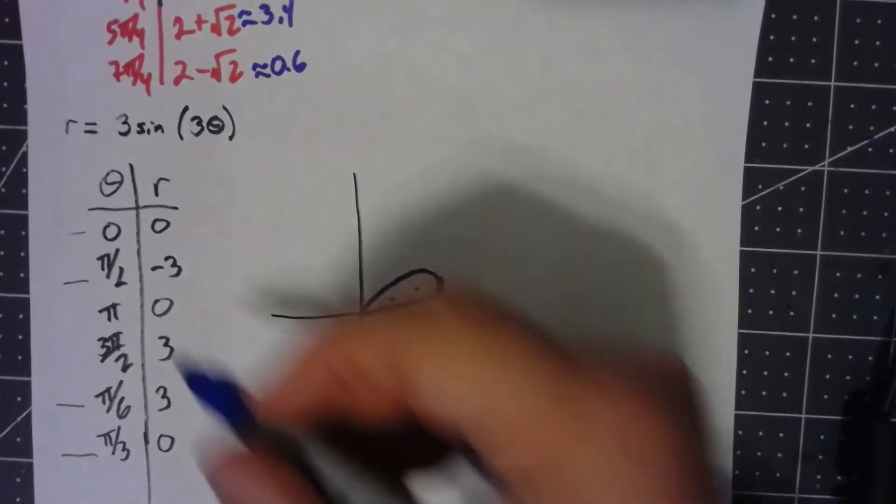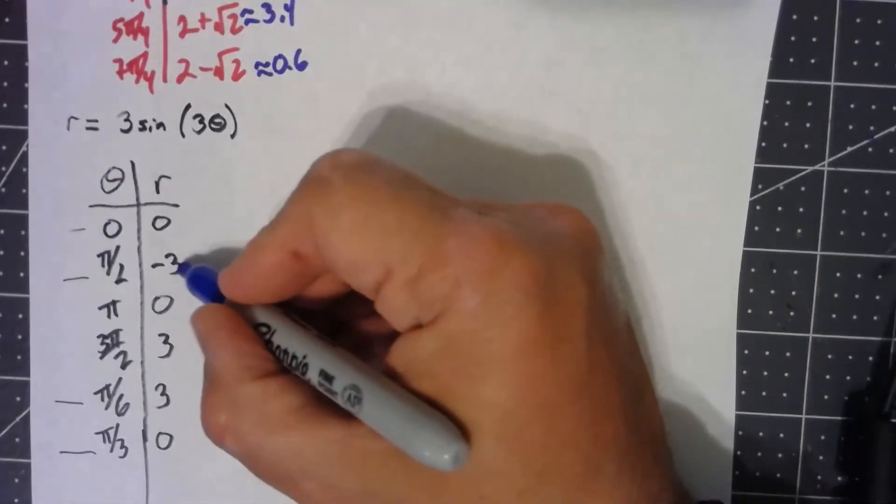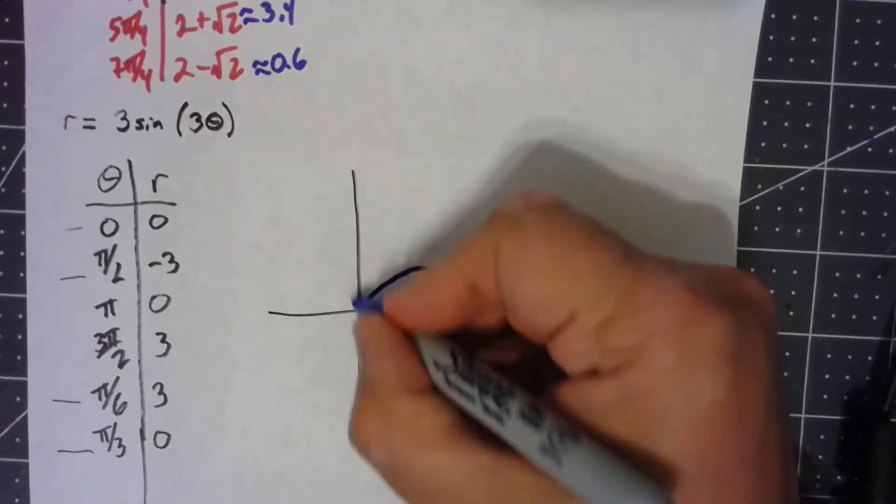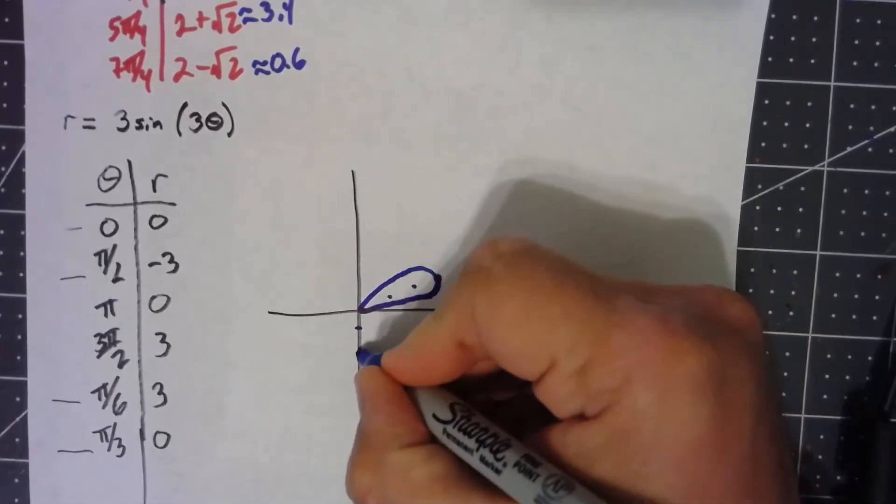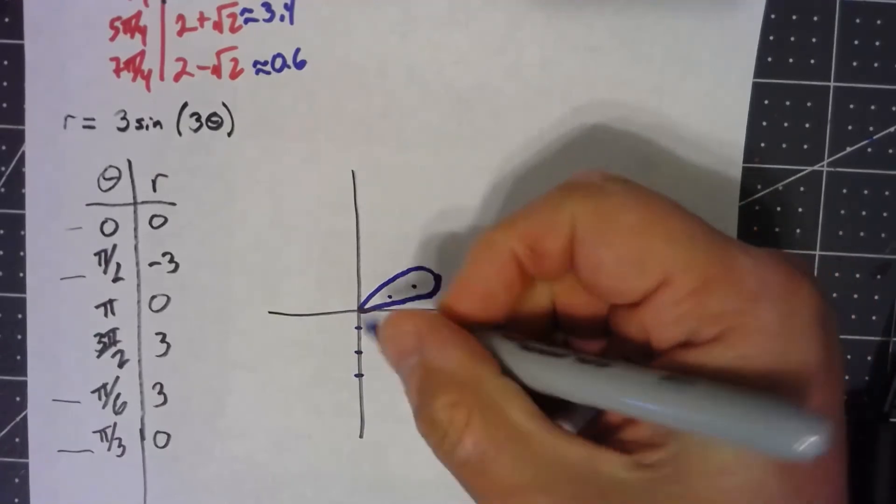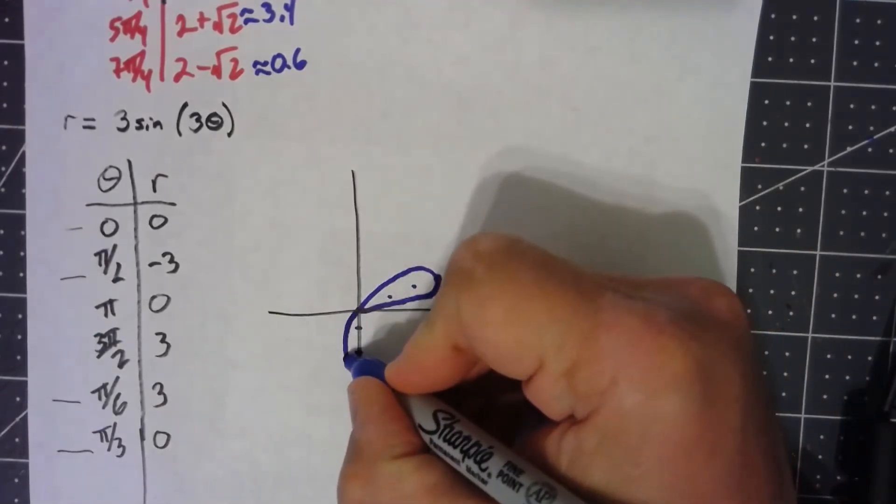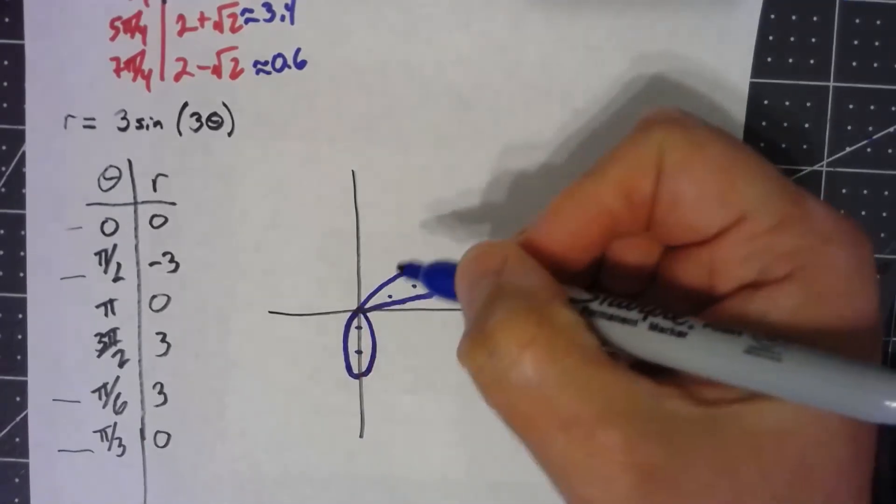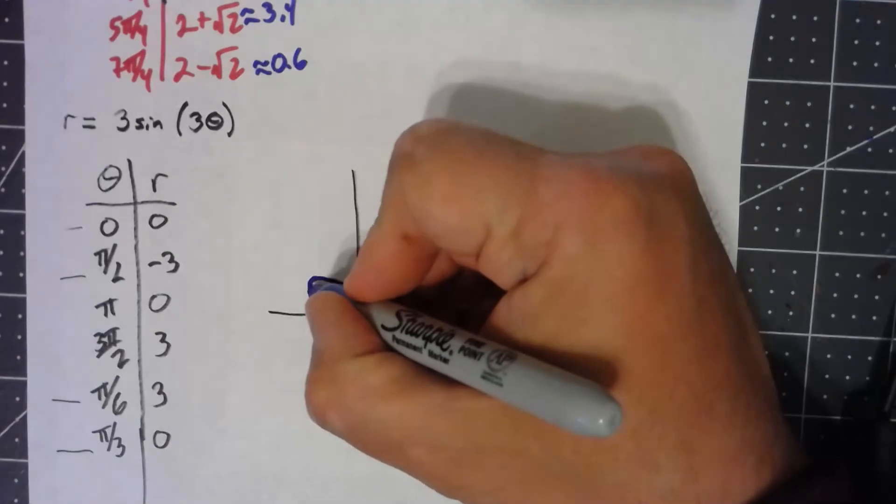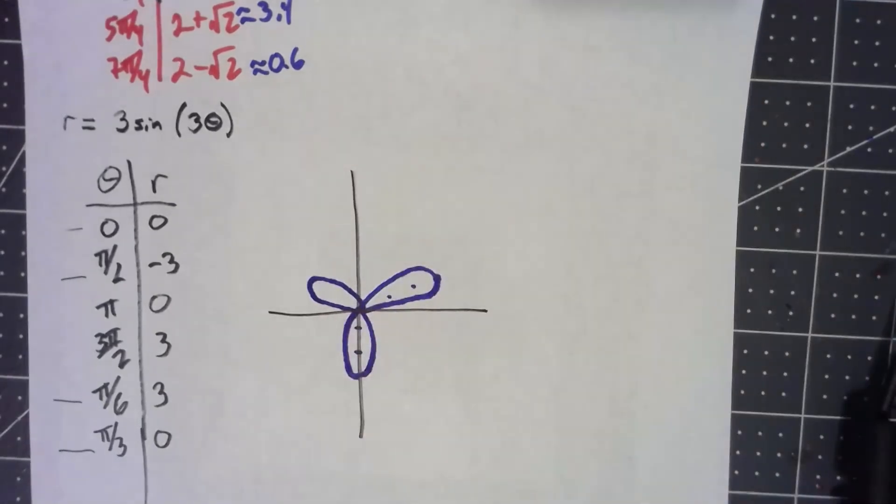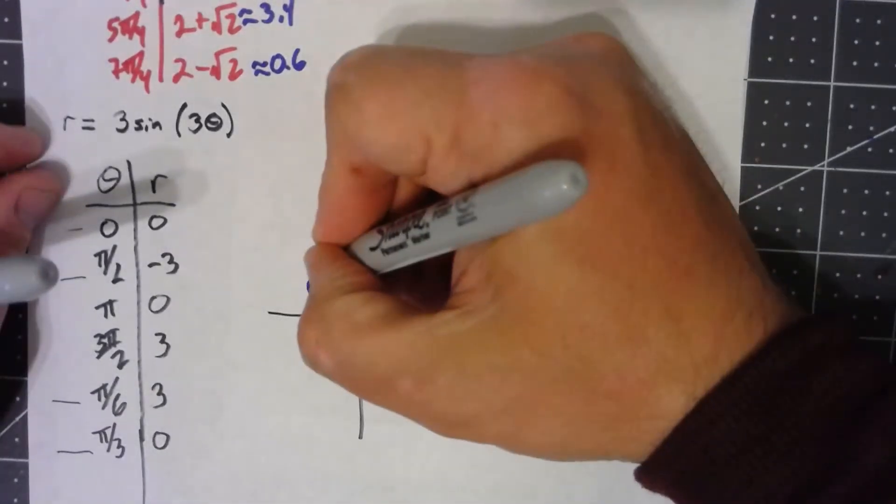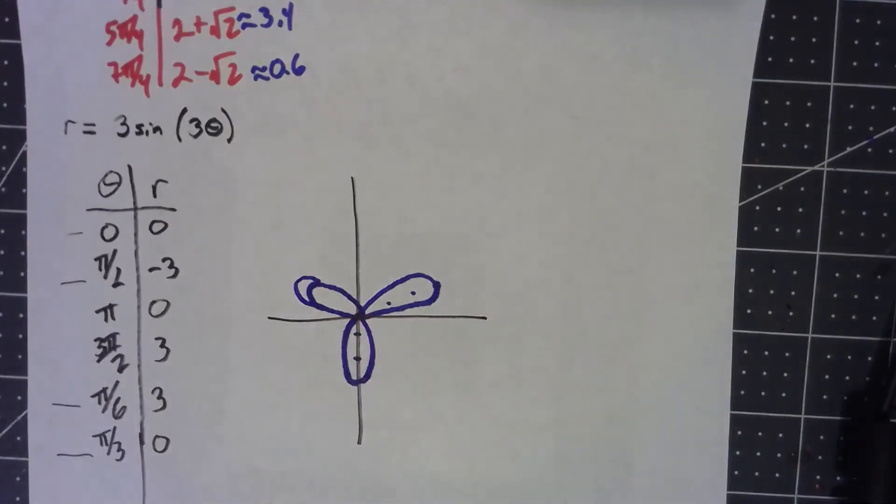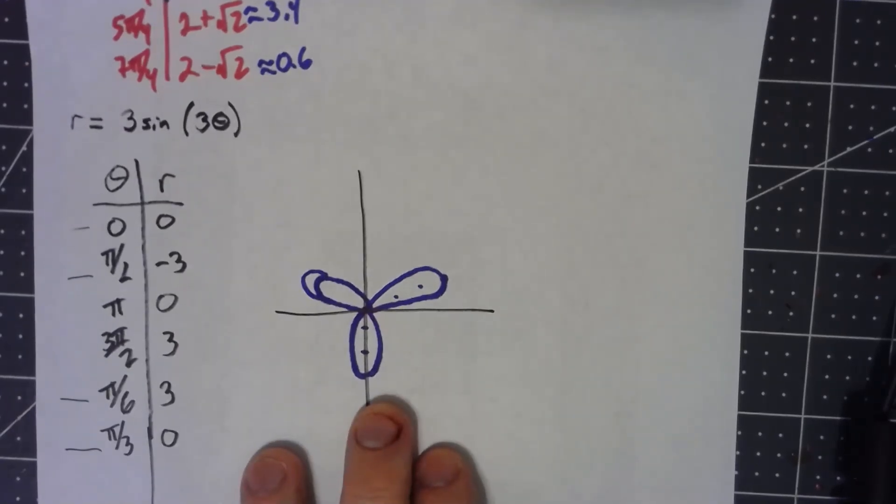And then what happens is the actual thing starts going negative. At pi over 2, we're down to here. This thing kind of curves around down like that and then comes back up. And then it's going to have another petal over like that. And these should all be the same size. I'm just not very good at drawing it. And there we go. Just by plotting points, you can see what the graph looks like.